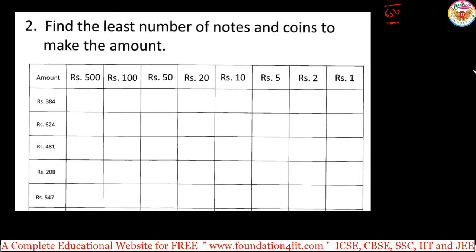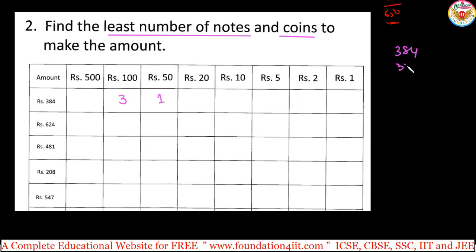That is the first type — practice it until you are confident. Then we move to the second type: the least number of notes and coins to make the amount. The question is 384. You cannot take a 500-rupee note, so take 3 notes of 100 rupees, giving 300. Remaining is 84. Take 1 note of 50 — you cannot take 2 since that exceeds 84. That gives 350, and 34 more is needed.